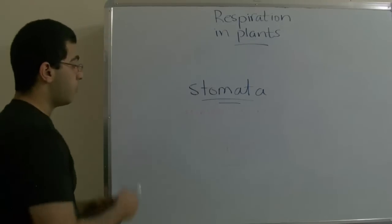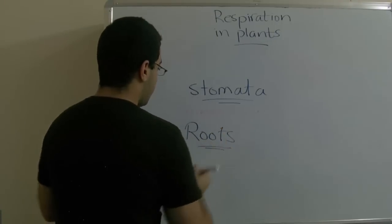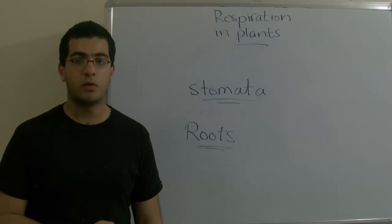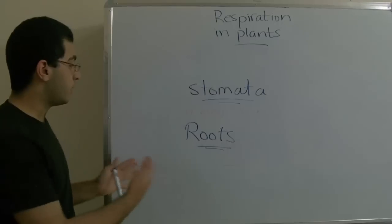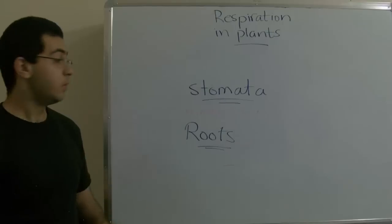The oxygen also may enter through the roots of the plant through water, as the oxygen may be dissolved in water. The roots absorb the water for the need of the plant, so the oxygen goes into the plant through water.